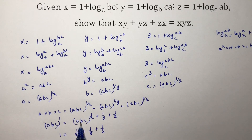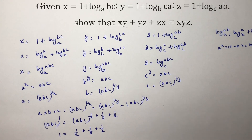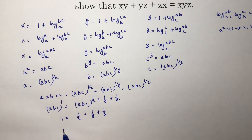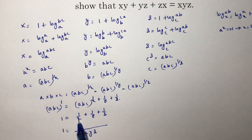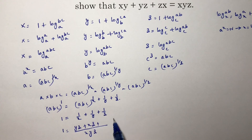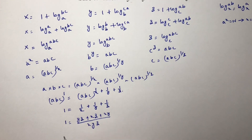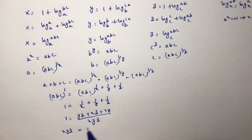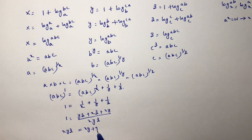Since the bases are equal, we equate the powers. Taking the LCM of x, y, z on the right side: for the term 1/x, multiply by yz; for 1/y, multiply by xz; for 1/z, multiply by xy. Cross-multiplying gives xyz equals yz plus xz plus xy, which can be written as xy plus yz plus zx. This is the required result.